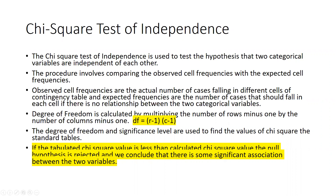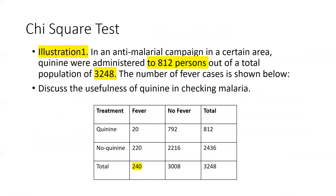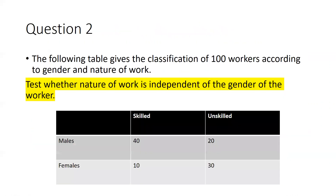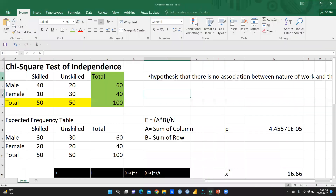Let me start with a simple example I have taken for this calculation. Here is the classification of 100 workers according to gender and nature of work. We just want to test whether nature of work is independent of the gender of the worker. The problem is: 40 males are skilled and 20 males are unskilled; 10 females are skilled and 30 are unskilled.